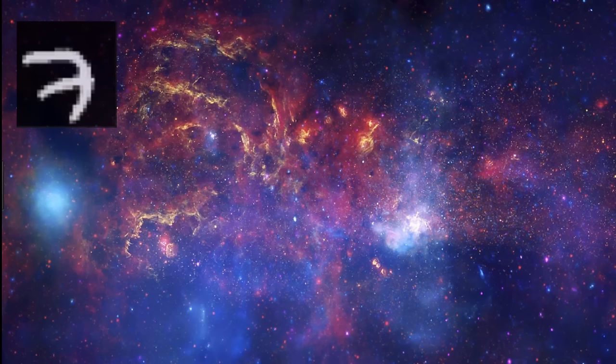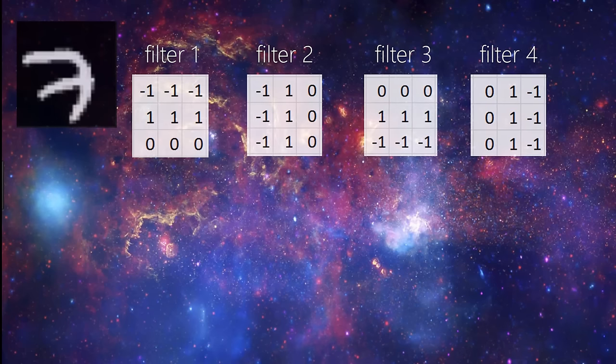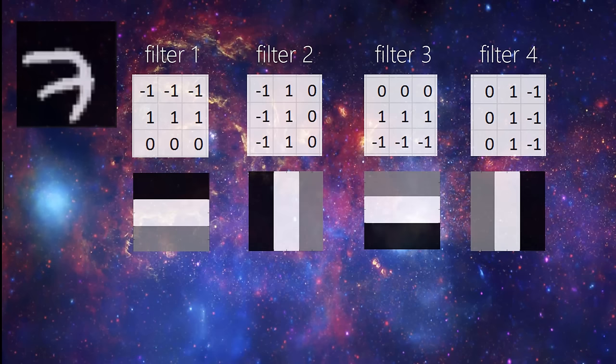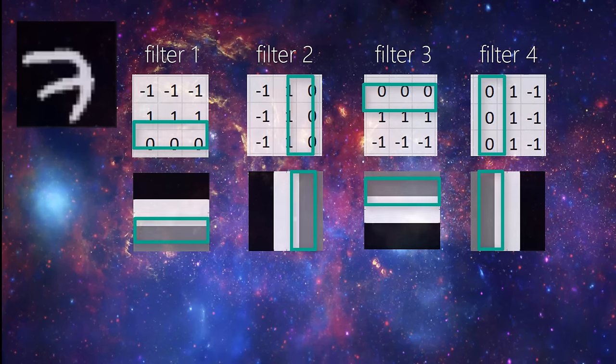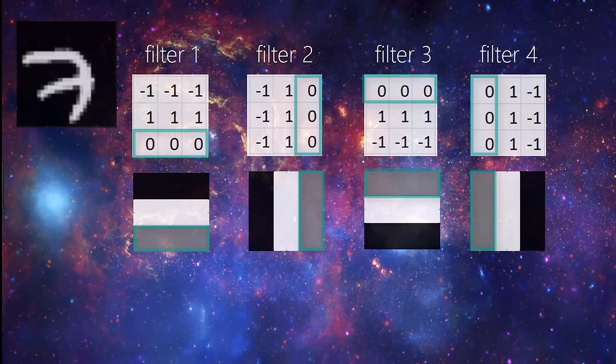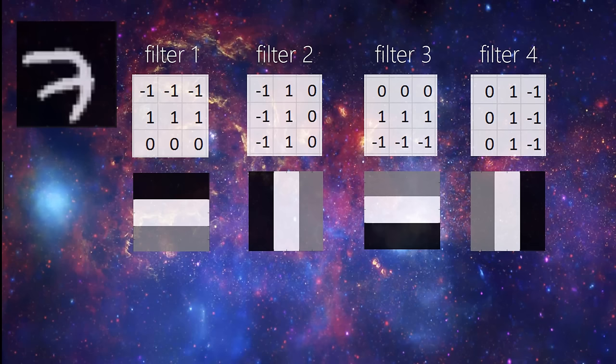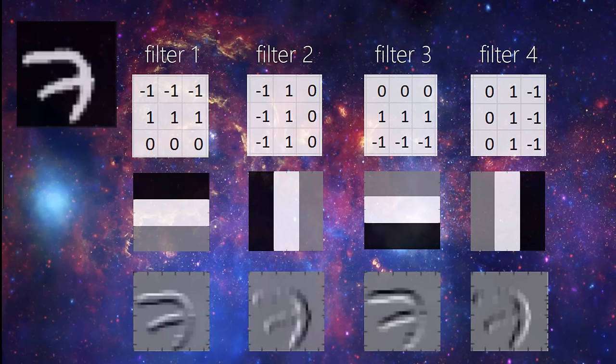And now let's say we have four 3x3 filters for our convolutional layer. And these filters are filled with the values you see here. And these values can be represented visually as these filters where the minus ones correspond to black, ones correspond to white, and zeros correspond to gray. So if we convolved our original image of a 7 with each of these four filters individually, this is what the output would look like for each filter.